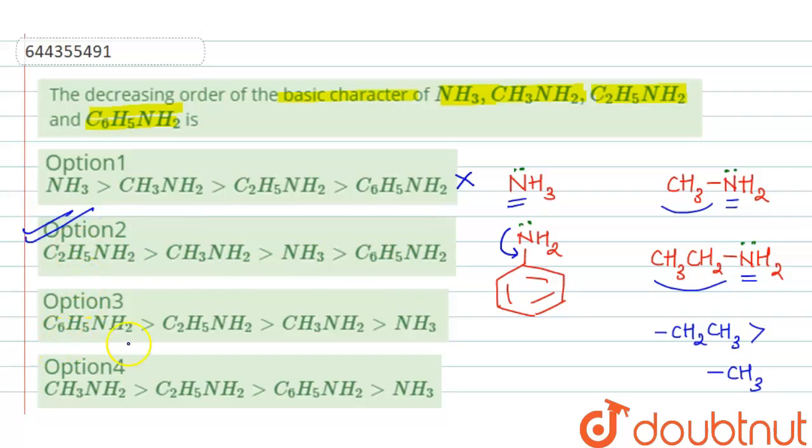is the correct option. Here it is shown that aniline is most basic, so it is incorrect. And here methylamine, so it is also incorrect. So our correct option is option 2.